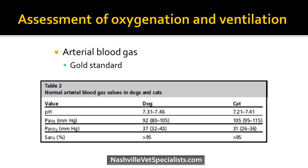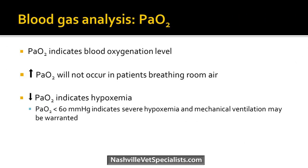To assess oxygenation and ventilation in our patients, the gold standard — not done often unless perhaps under anesthesia — would be an arterial blood gas. Here's a chart of normal values for dogs and cats. What we're most interested in is the PaO2 and PaCO2. The PaO2 is the partial pressure of oxygen in arterial blood and tells you about oxygenation status. You don't really see a lot of increases in PaO2 in a pet breathing room air. The concerning finding would be a low PaO2, which indicates hypoxemia — low oxygen in the bloodstream.